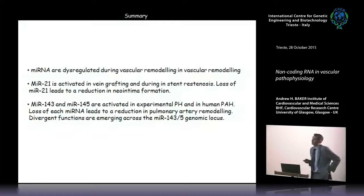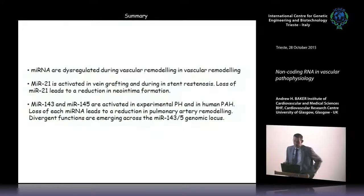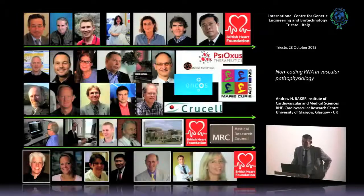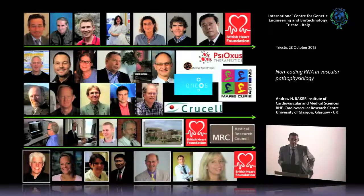To summarize: microRNAs are definitely dysregulated in vascular remodeling. miR-21 is activated in vein grafting and in-stent restenosis; we're particularly interested in chasing the miR-143/145 axis in the lung and further interrogating the lncRNAs in this system. I'm grateful to everyone in the lab and collaborators, particularly those who helped with the microRNA work, the clinical trial, the EU virology programs, and the British Heart Foundation Centre for Vascular Regeneration. Thank you.